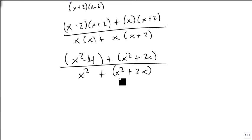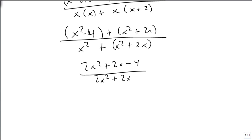We then combine to get 2x squared plus 2x minus 4, over 2x squared plus 2x. We factor out a GCF of 2 on top, leaving x squared plus x minus 2, over 2x times x plus 1.